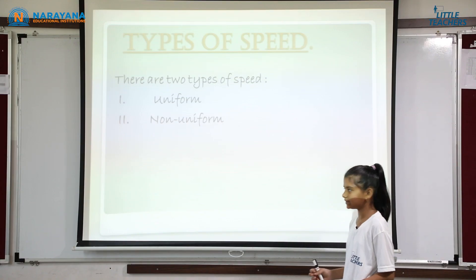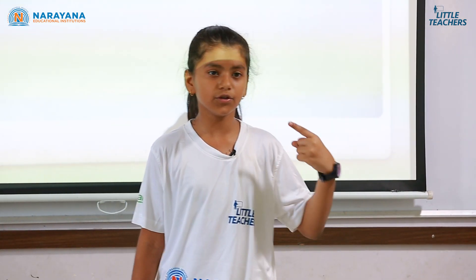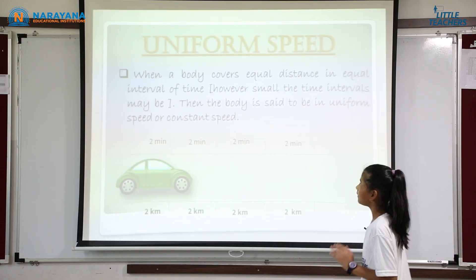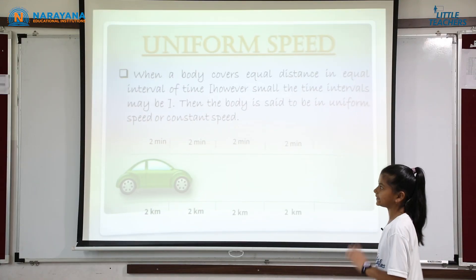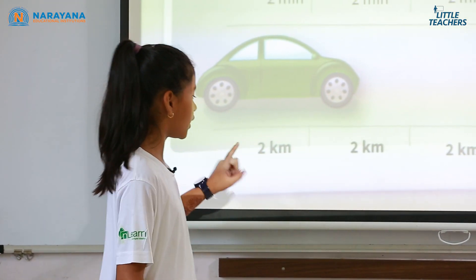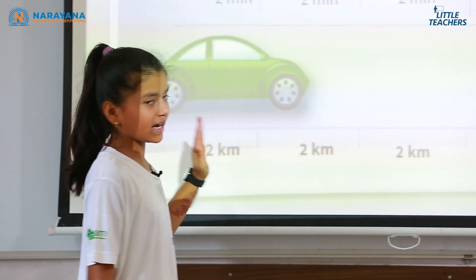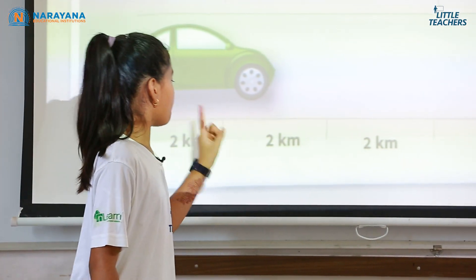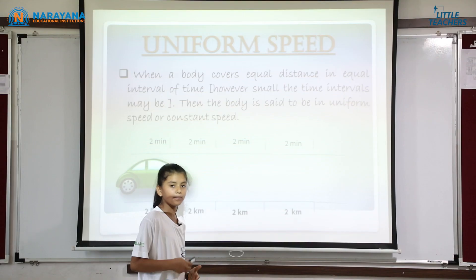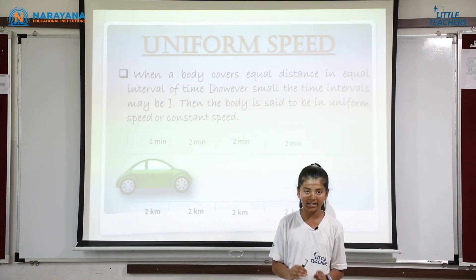He covers more distance in less unit of time. There are two types of speed: uniform and non-uniform. Uniform speed is when a body covers equal distance in equal intervals of time. We can see that this car is covering 2 kilometers in 2 minutes from point A to B, then B to C also 2 kilometers in 2 minutes, and it repeats this motion. This is known as uniform speed or constant speed.